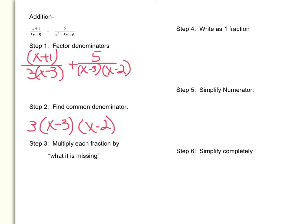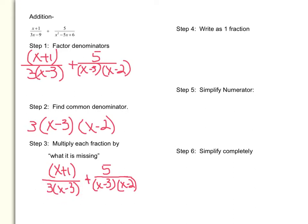Step three is to multiply each fraction by what is missing. The first denominator, three times x minus three, is missing x minus two compared to our common denominator. So I have to multiply the first denominator by x minus two, and if I multiply the denominator by a term, I also have to multiply the numerator by that exact same term. Now the second denominator, x minus three times x minus two, is missing the three. So I'm going to multiply that denominator by three, and I also have to multiply the numerator by three.